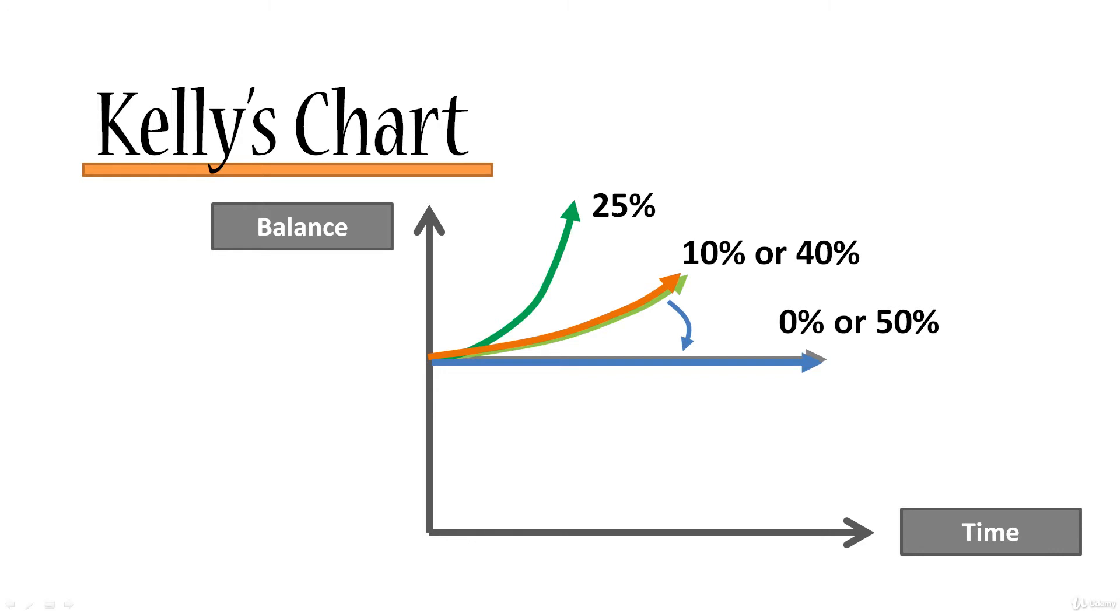If you keep increasing the risk further and go to 60%, the arrow will start to drop down into the negative area. Your balance will start declining and move away from what it was originally. And if you keep increasing even further, say to 75%, your balance will decrease even more.